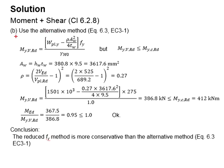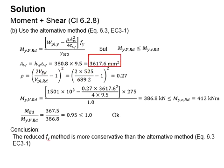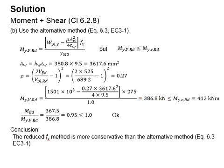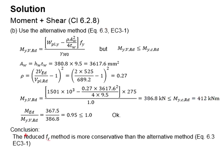Using the alternative Eurocode method, the area of the web is determined by multiplying the height and thickness of the web, giving 3617.6 mm². Calculate ρ and substitute the relevant values into the equation. The reduced moment capacity is found to be 386.8 kNm, which is less than the original moment capacity but slightly higher than the applied load. Therefore, it is considered acceptable.